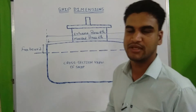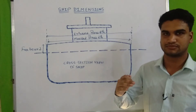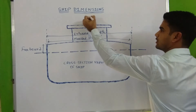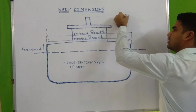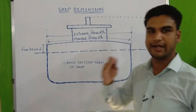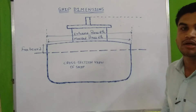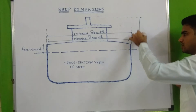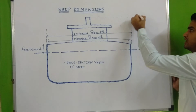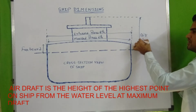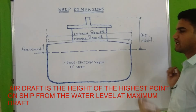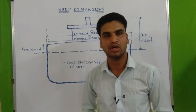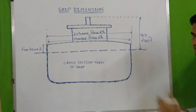Next is air draft. Air draft means the height from the highest point on the ship down to the water level at its maximum draft. Air draft is actually measured when we are traveling or passing under an overhead obstruction like a bridge or power cable, in order to keep clear from that.